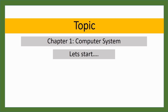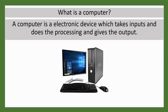Hello everyone, my name is Ajay and today we're going to cover the topic of computer systems, which is the first chapter in class 9 CBSE. We're going to understand what exactly a computer is and how it functions. A computer is an electronic device which takes input, does processing, and gives output. We're going to get into the details of what exactly that means.